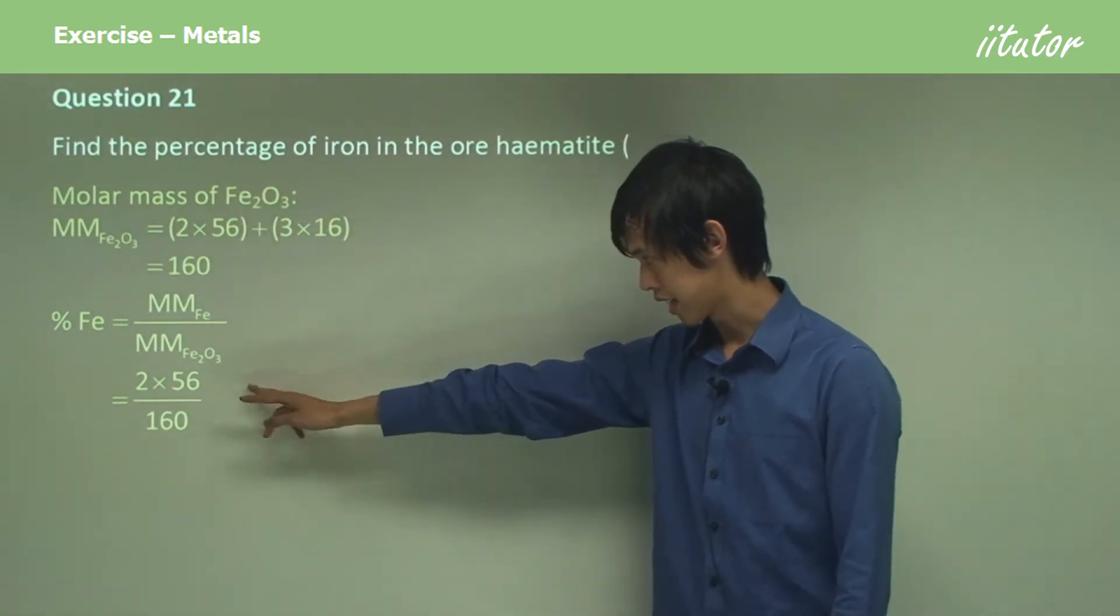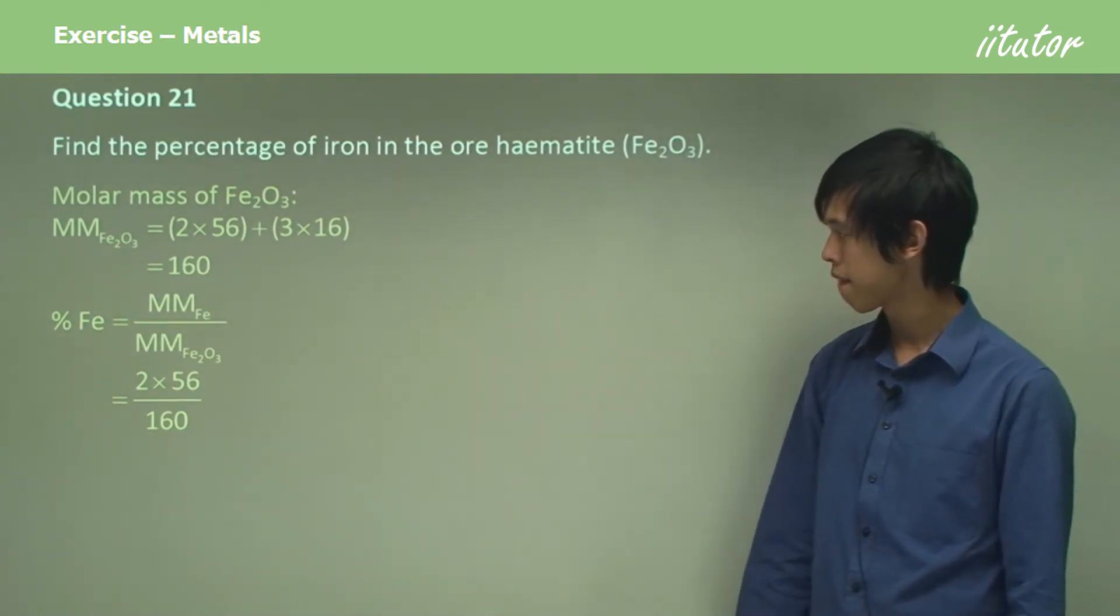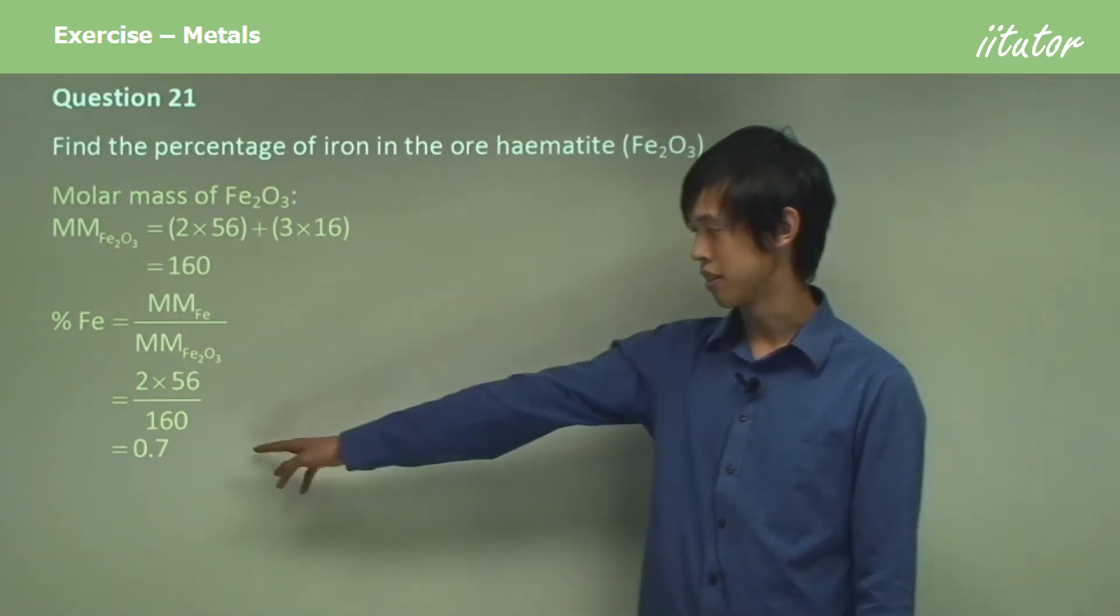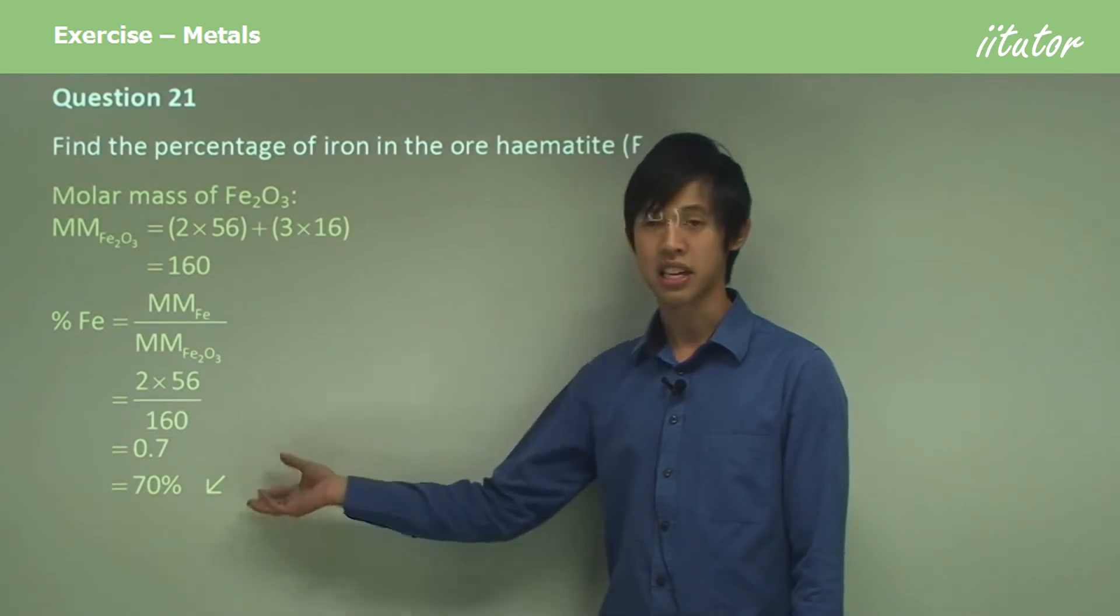So you take that, divide it by 160, and you get 0.7, which is 70%.